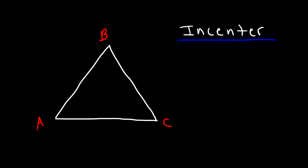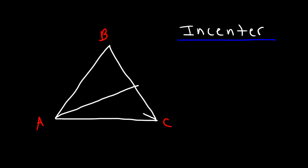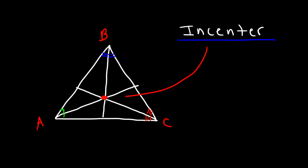So let's draw an angle bisector of angle A. And then draw the angle bisector of C, and do the same thing for B. They should intersect at the middle. These two angles must be congruent, those two angles have to be congruent to each other, and these two must be congruent. So the point of intersection is known as the in-center.